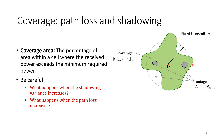Because of shadowing, the coverage region is not a perfect circle — it has an irregular, bacteria-like shape with outage areas inside. Coverage is defined as the percentage of area within a cell where the signal is above the minimum required threshold. You exclude areas with outage and divide the covered area by the total cell area to get the coverage percentage.